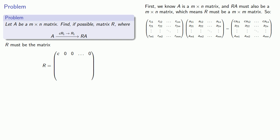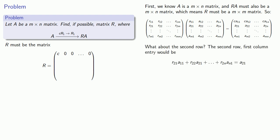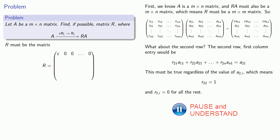What about the entries in the second row? These will be found by multiplying the second row of R by each of the columns of A. The second row, first column entry has to equal A₂₁ regardless of the values of the entries of A. The only way to guarantee that is for R₂₂ to be 1 and every other entry in that second row of R to be equal to 0, leaving the entries in the second row of the product unchanged.